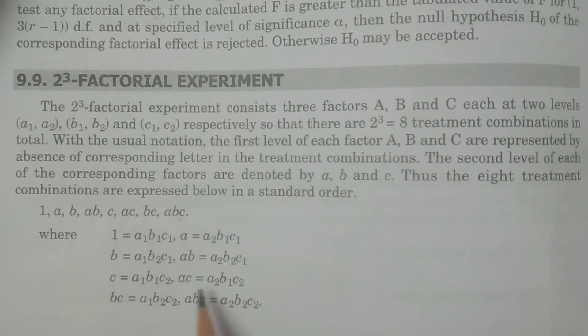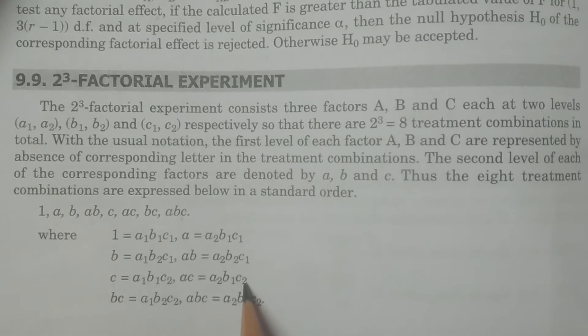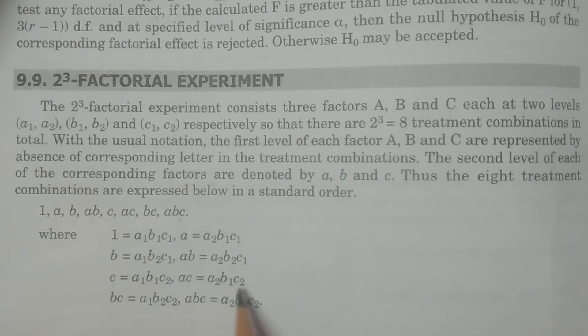AC. A and C are at second level. Second level A2, C2. And B at first level B1. B is absent here. So A2, B1, C2.